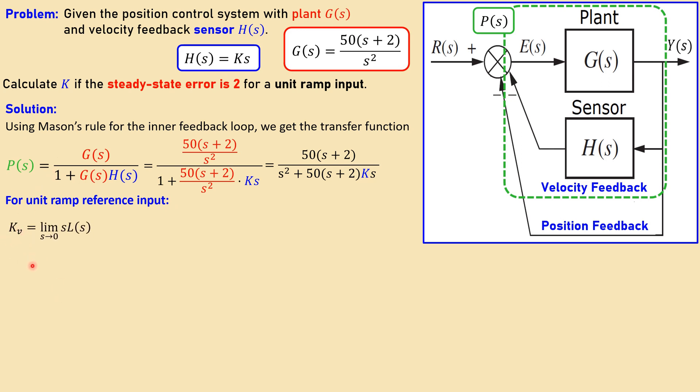Or velocity static error constant, given by this, which is the limit s approaching 0 for s times the loop transfer function. In this case the loop transfer function is then P times 1, that means then also P. So L is equal to P.